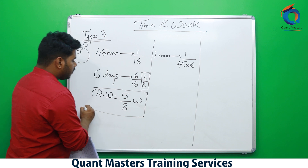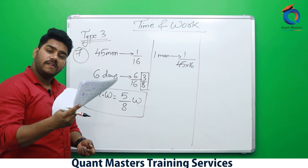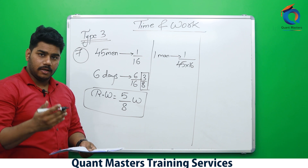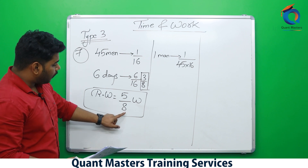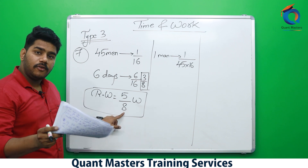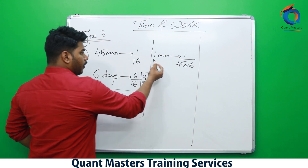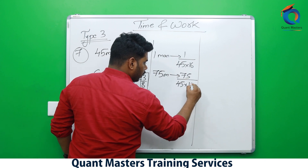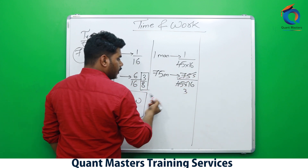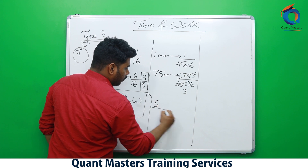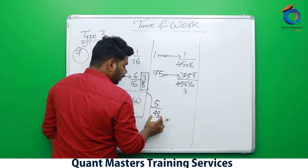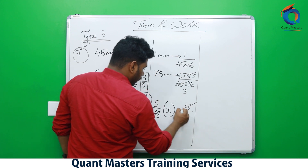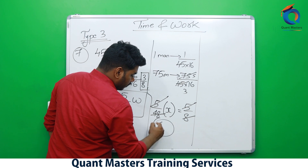75 men in one day complete 75/(45×16) of the work — simplifying: 5/48 of the work per day. To complete 5/8 of the work: (5/8) ÷ (5/48) — the 5s cancel, giving 48/8 = 6 days. So the remaining work is completed in 6 days.